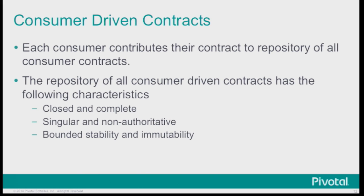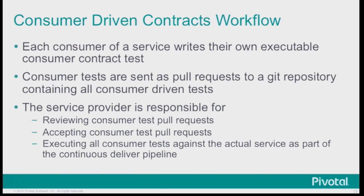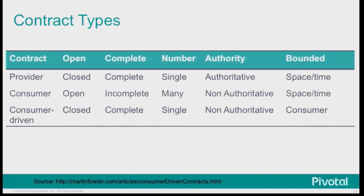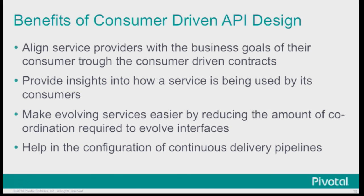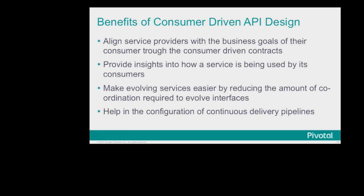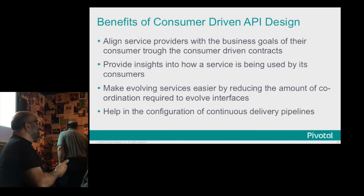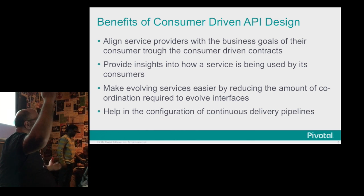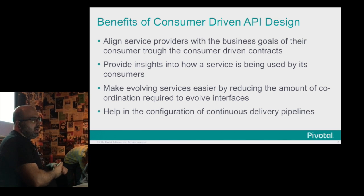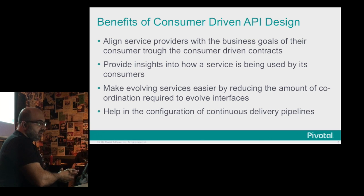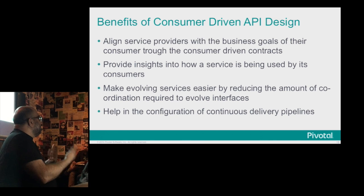To summarize: each consumer is going to contribute their contracts to a repository of all consumer contracts. The workflow is each consumer writes their own executable contract tests, contributes them to a git repository via pull request, the service provider reviews and approves it, and if they accept it, includes it in their CD pipeline. The benefits are you align service providers with the business goals of consumers — a fancy way of saying you don't implement things you don't need. It gives you insights into how people are actually using your service, makes evolving services easier, and really helps you do continuous delivery.